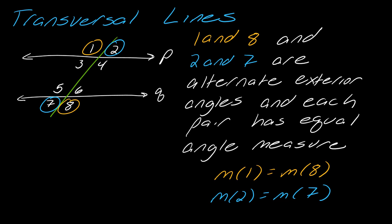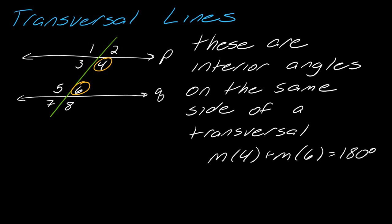The next pair is one and eight and two and seven. These are alternate exterior angles and each pair has equal angle measures. So one and eight are the same and two and seven are the same. Again, pause the video if you need to write any of this down.